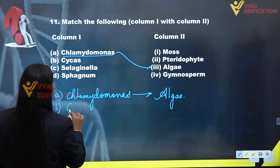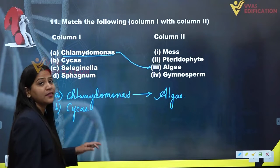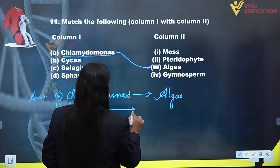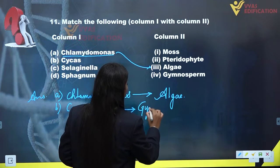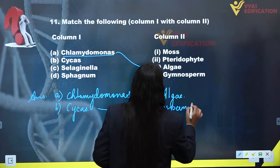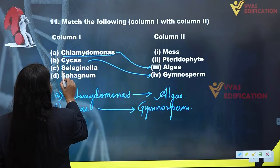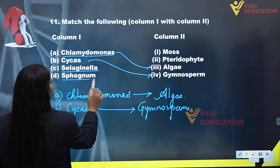In B we have Cycas. Now Cycas is a species of gymnosperms. This is a gymnosperm plant. So Cycas is gymnosperms. Then we are left with Selaginella and Sphagnum.